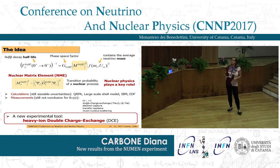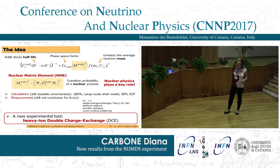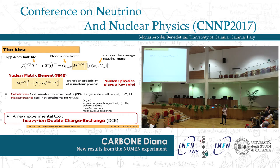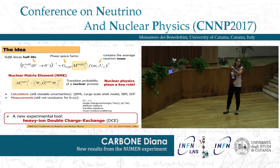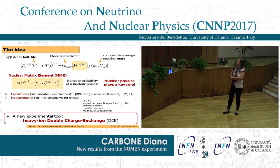The NUMEN project is strictly connected to the nuclear matrix element which appears in the expression of the half-life of neutrino-less double beta decay. Here we have the term in which the average neutrino masses are contained. We want to obtain information on this term. We have the phase space factor, which is almost under control with calculations, and then the nuclear matrix element.